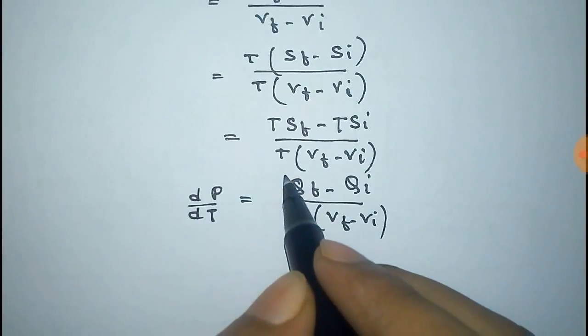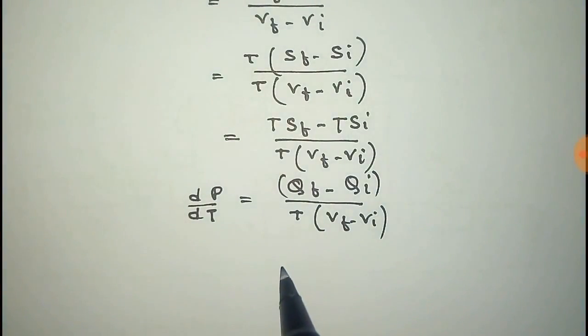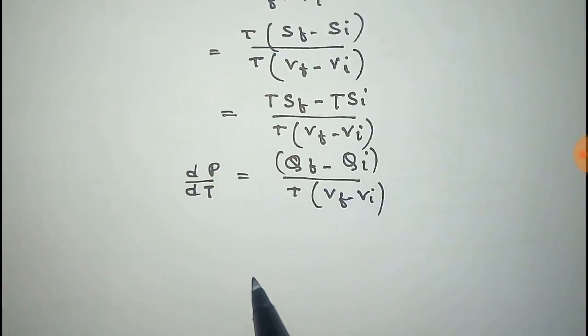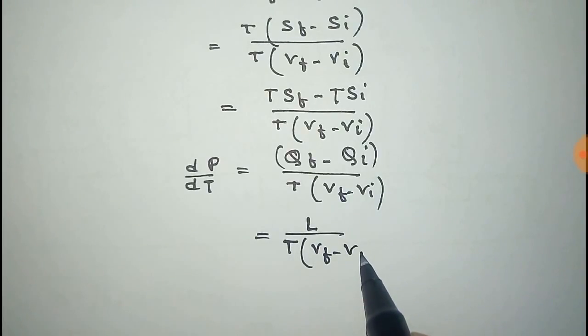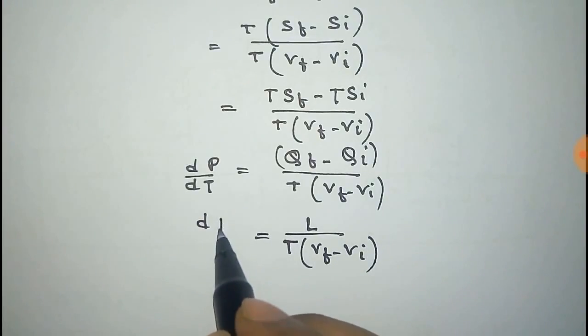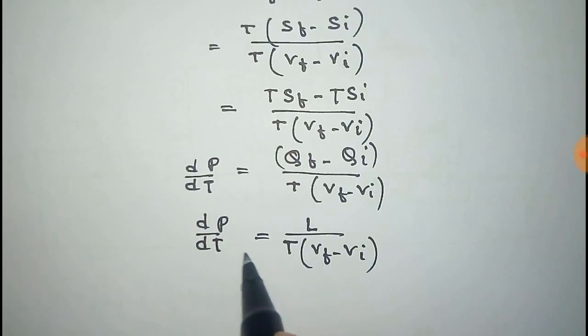Now the change of heat, that is Qf minus Qi, in the first order phase transition is equal to the latent heat because it is only the phase transition. So it will be L. Here L is the latent heat.